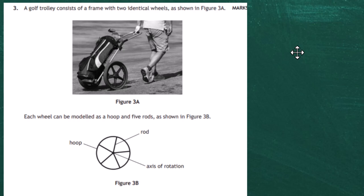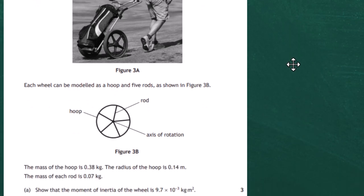Question 3 from the 2022 Advanced Higher Physics examination of the SQA. A golf trolley consists of a frame with two identical wheels as shown in figure 3a. Each wheel can be modeled as a hoop and five rods as shown in figure 3b. The mass of the hoop is 0.38 kg, the radius of the hoop is 0.14 m, and the mass of each rod is 0.07 kg. For three marks, we are asked to show the moment of inertia of the wheel is 9.7 × 10⁻³ kg·m².